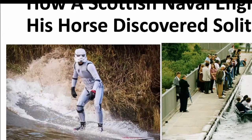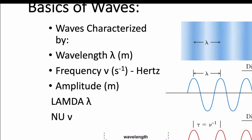Solitons are actually used in physics related to light and communication. The basics of waves: they are characterized by a distance called lambda — the wavelength, from peak to peak — and by how fast it oscillates, which is the frequency, called nu, and how big the wave is, which is its amplitude.